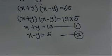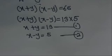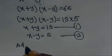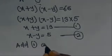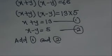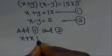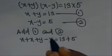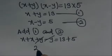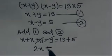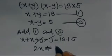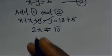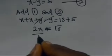To solve them simultaneously, let's add equation 1 and equation 2. We have x plus x, plus y minus y, equals 13 plus 5. The y terms cancel out, giving us 2x equals 18. To obtain x, we divide both sides by 2.